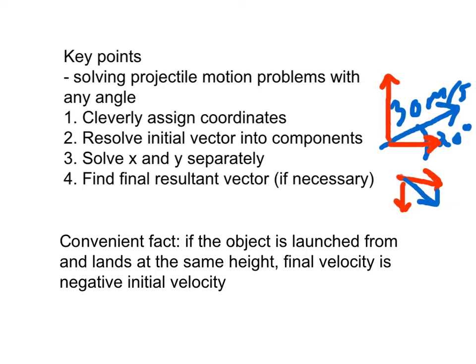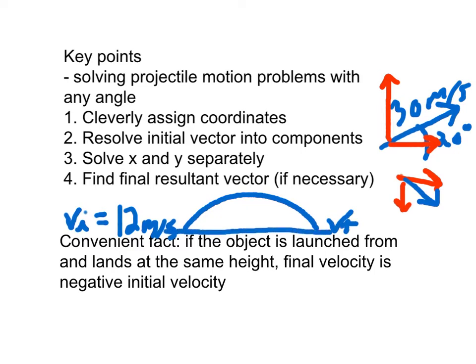A convenient fact, if an object is launched and lands at the same height, final velocity is the negative of the initial velocity. So let's say I launch something with an initial velocity of 12 meters per second, and it goes across a football field maybe. When it lands, if it lands at the same height, so if we have the object land and start on the ground,